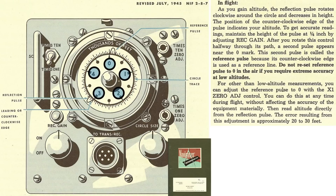To find the plane's altitude when below five thousand feet, read the leading edge of the reflection pulse's lobe line against the scale. In this example, the plane is at a three thousand foot absolute altitude.